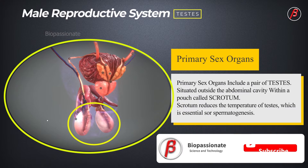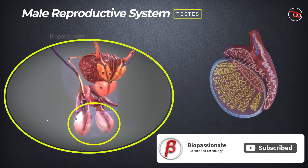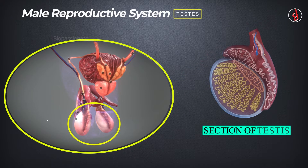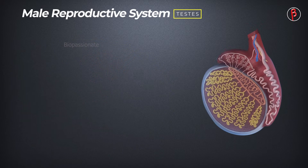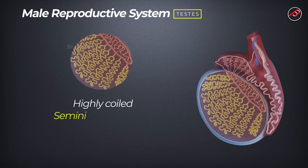The testes are situated within the scrotum or scrotal sac, which helps reduce the temperature of the testes by about 2 to 2.5 degrees centigrade — a condition necessary for spermatogenesis. Each testis has about 250 compartments called testicular lobules.